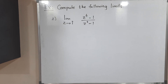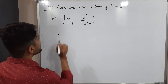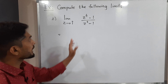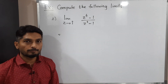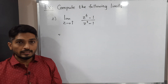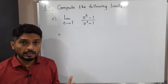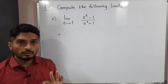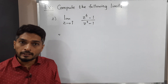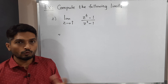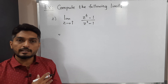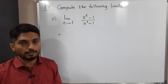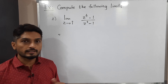Now let us discuss the second example. We have to find the value of the limit as z tends to i of (z⁴ − 1) / (z² − 1). Let us see what happens if we directly put z = i. If we get an indeterminate form, only then will we go for further calculations; otherwise we can use the direct value.